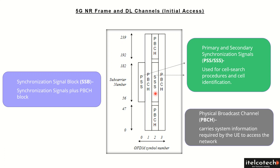There are different PCIs — Physical Cell Identities — so every cell is distinguished from others. The UE distinguishes between different surrounding cells using the PCI, which is composed of the PSS and SSS. There are around 1008 unique PCIs available, so when planning a 5G network we must ensure a unique PCI is assigned within a certain area, and then it can be reused after a sufficient distance.